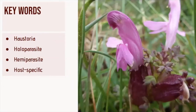There are some key words we're going to talk through in this presentation. The first one is haustoria, which is the structure by which the parasite attaches itself onto the host plant to obtain its nutrients.